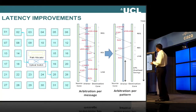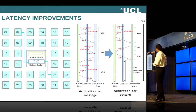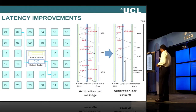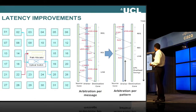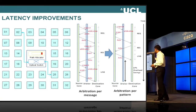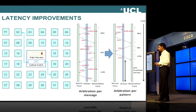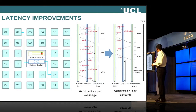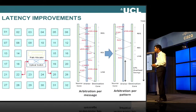Now, what will happen if Core22, during this pattern, is trying to communicate with Core25? Core22 would need to send a path request, but since Core25 is now taken up, the request will need to wait in the request FIFO until this communication is done and the circuit is cleared, so that Core22 can then interact with Core25.